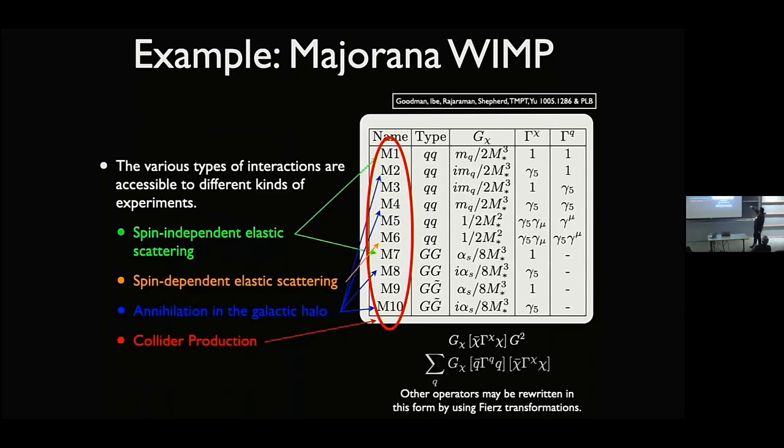But there were still interesting things we could learn. Of these 10 different types of interactions, it turns out only two of them corresponded to spin independent elastic scattering. So direct detection, which was already at that time some of the most stringent constraints on WIMP theories, was actually really only talking about two of these things. Spin dependent was just talking about one of them. Annihilation in the galactic halo was suppressed by the fact that it's non-relativistic there, unless you had four of them, which interestingly enough don't overlap with direct detection, which told you that you could actually build a theory that would give large signal in one and not the other. And colliders because they were producing things relativistically were more or less sensitive to all of them.